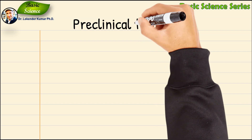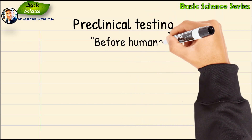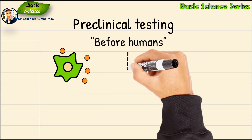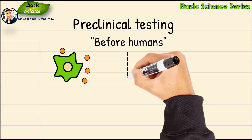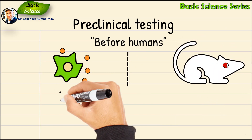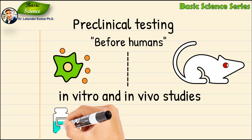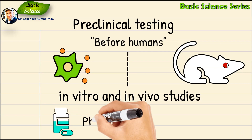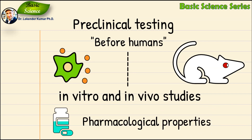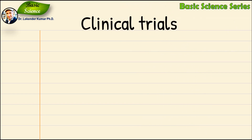The next step is preclinical testing. Before a drug candidate can be tested in humans, it undergoes preclinical testing, including in vitro and in vivo studies, to evaluate its pharmacological properties, toxicity, and safety.